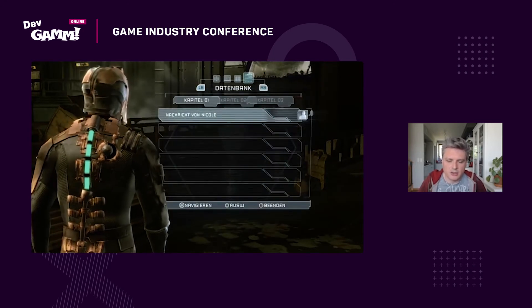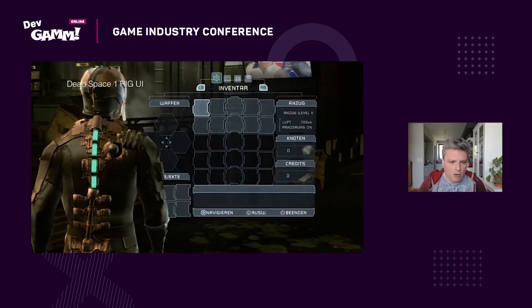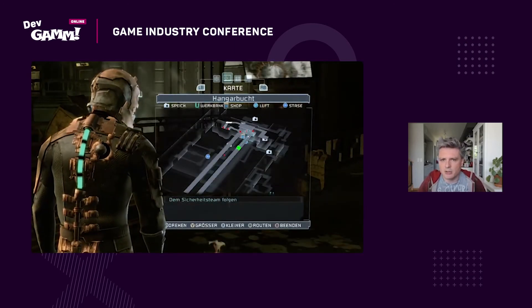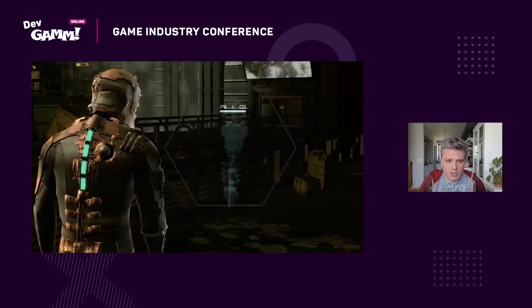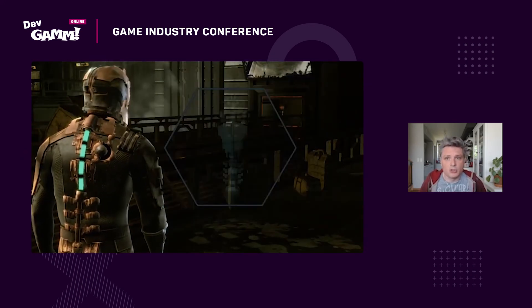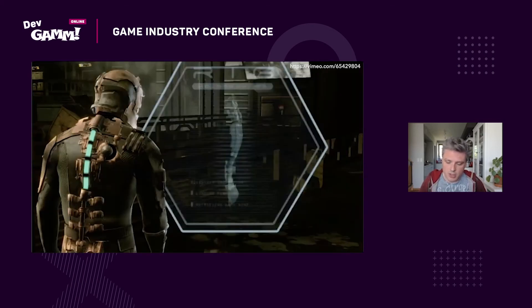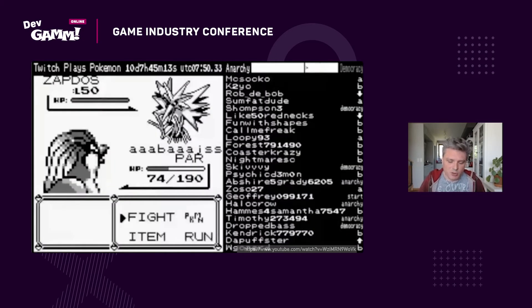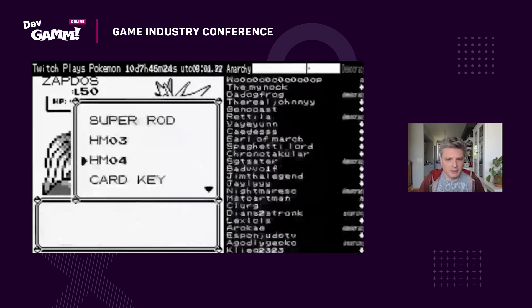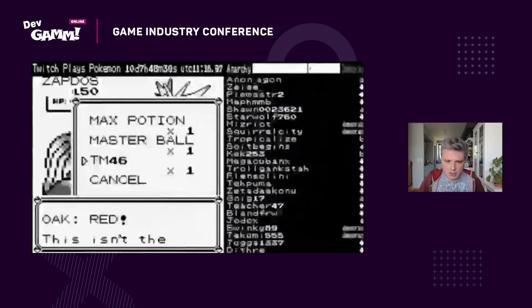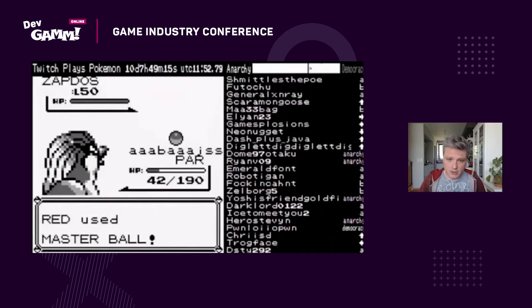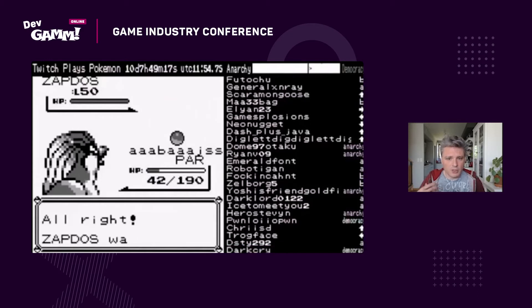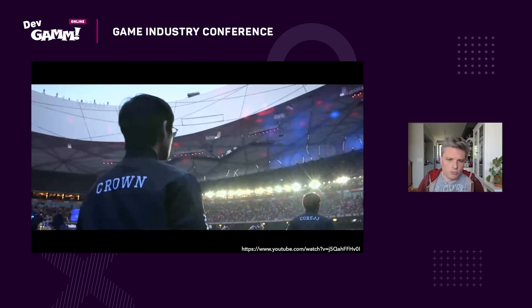With streaming, when a player streams a video game there's interaction with the audience — the audience interacts with the streamer, the streamer interacts with the game. And there's a special case where the spectator is also interacting with the game directly — Twitch Plays Pokémon, where thousands of people watch the stream and interact with the game using commands. So we have a sort of spectator interaction with the game.